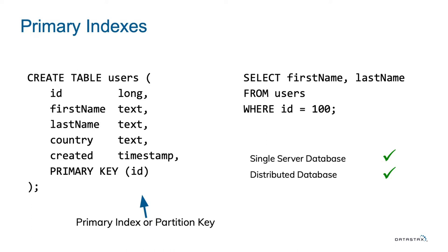Every time we talk about indexing in Cassandra, it's always a big topic and everyone gets excited. Primary indexes are well-known in every database. When you create a table and a primary key, that initial part — the ID in this case — is what we call a primary index. Indexing done by a database means it's a fast lookup; it's the primary part of the primary key, not novel to most databases.